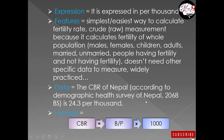Now for important data: the CBR of Nepal according to the Demographic Health Survey of Nepal 2068 BS is 24.3 per thousand. This means in 2068 BS there were almost 24 live births per thousand mid-year population. The formula for CBR is: CBR = B ÷ P × 1000, where B means total live births and P means mid-year population.